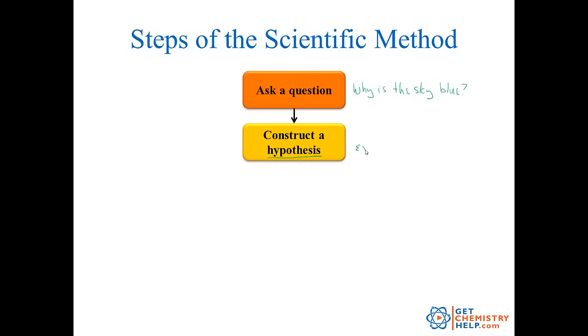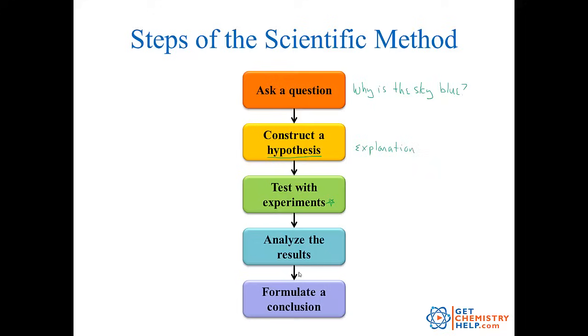Once you have your explanation, now is when you have to back it up and try to prove whether it's true or false, and you do that through experiments. Experiments are the difference in the scientific method and the way that scientists used to try to explain things. Once you've done your experiments, then you analyze your results and collect all your data, and then you formulate some kind of a conclusion.